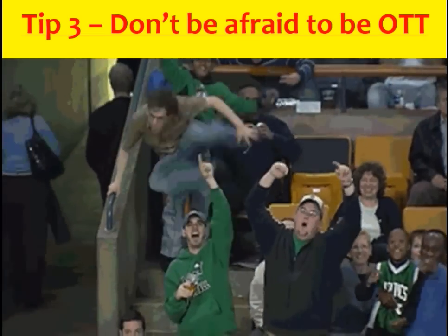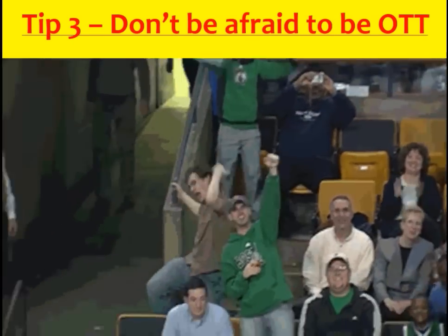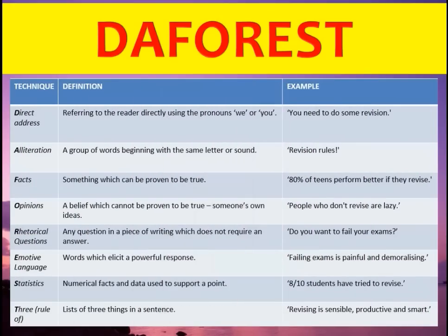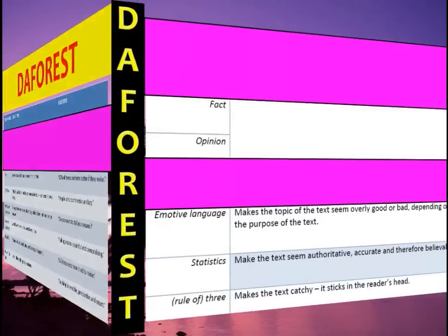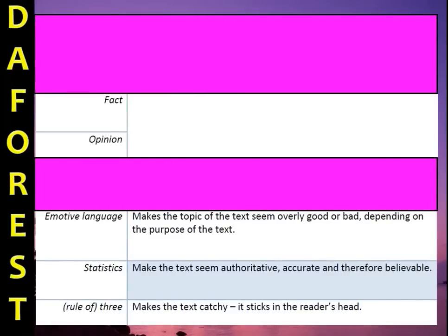Tip three: don't be afraid of being over the top. We're going to use the FOREST technique — Direct address, Alliteration, Facts, Opinions, Rhetorical questions, Emotive language, Statistics, and Rule of three. However, in a report it wouldn't be appropriate to use all of these. I wouldn't use alliteration, too much emotive language, or direct address. The ones I would use are: facts, opinions, a small amount of emotive language if relatively formal, statistics, rule of three, and possibly one rhetorical question at most.